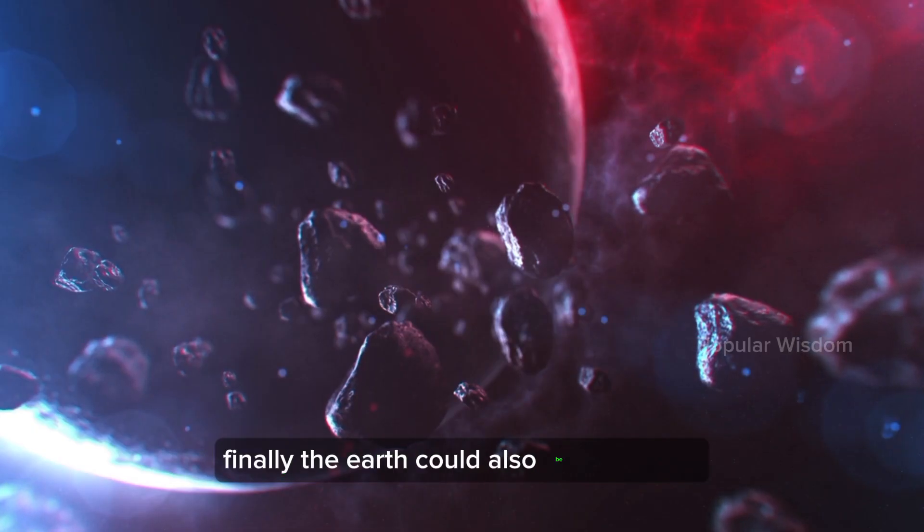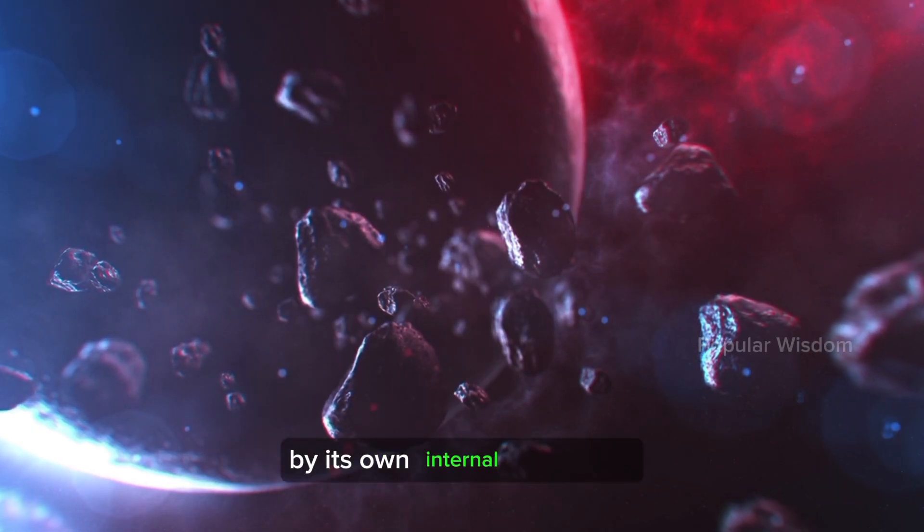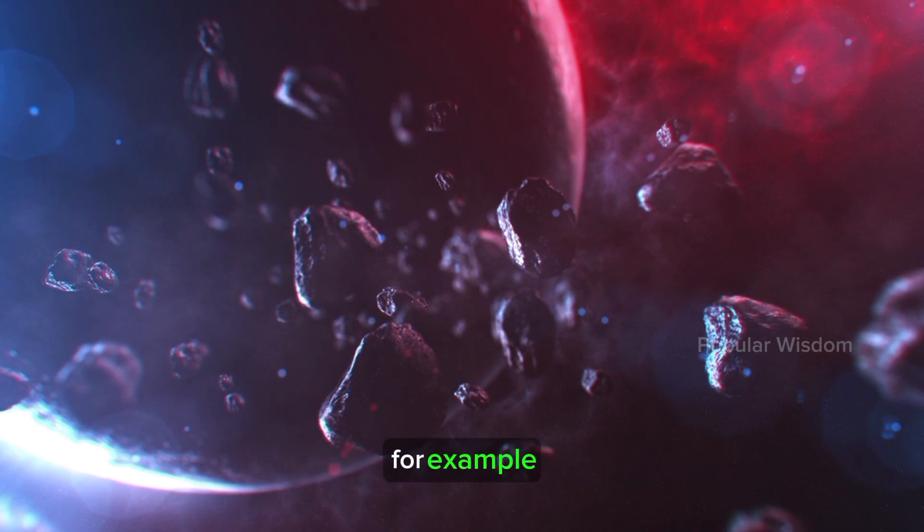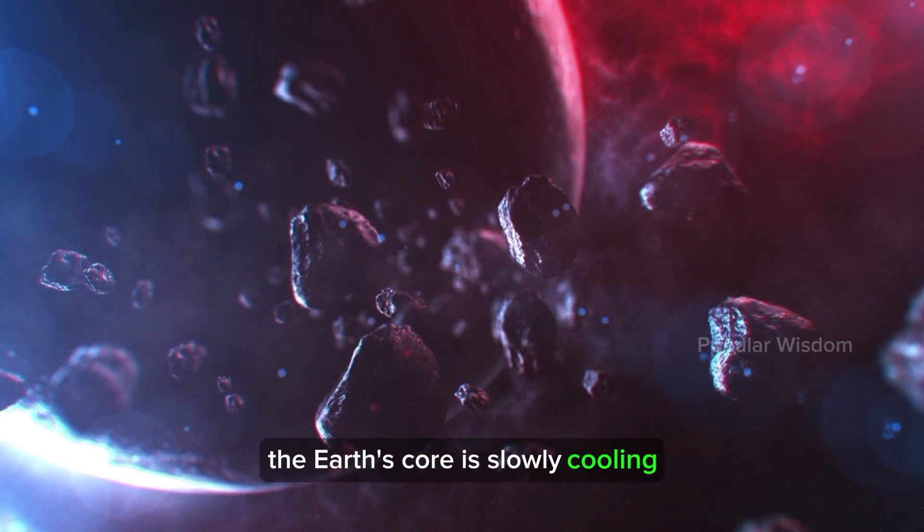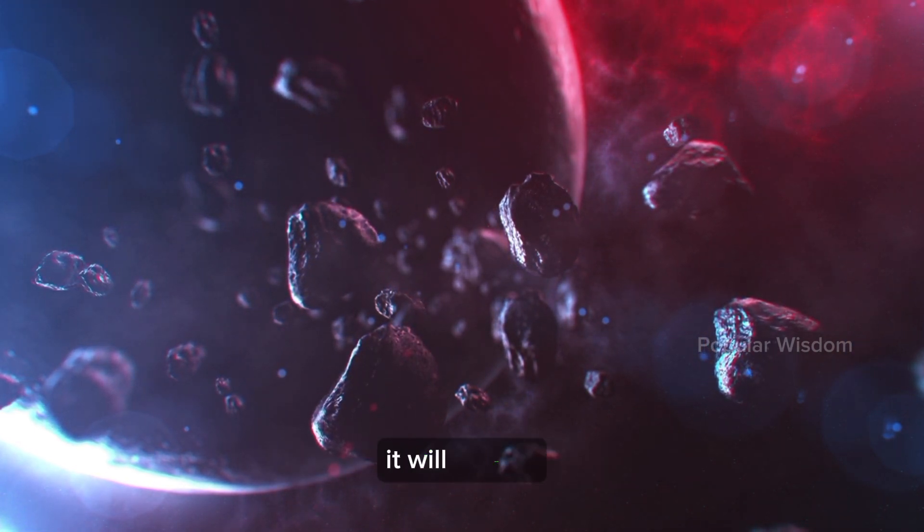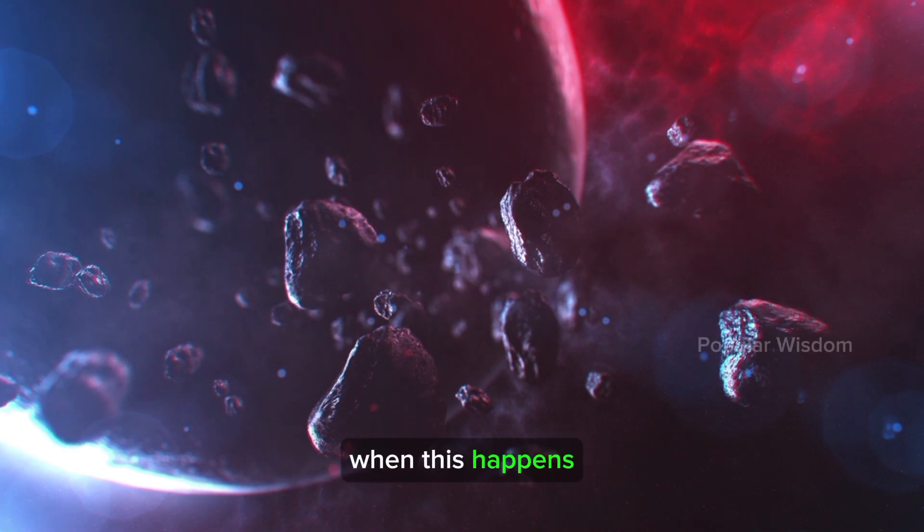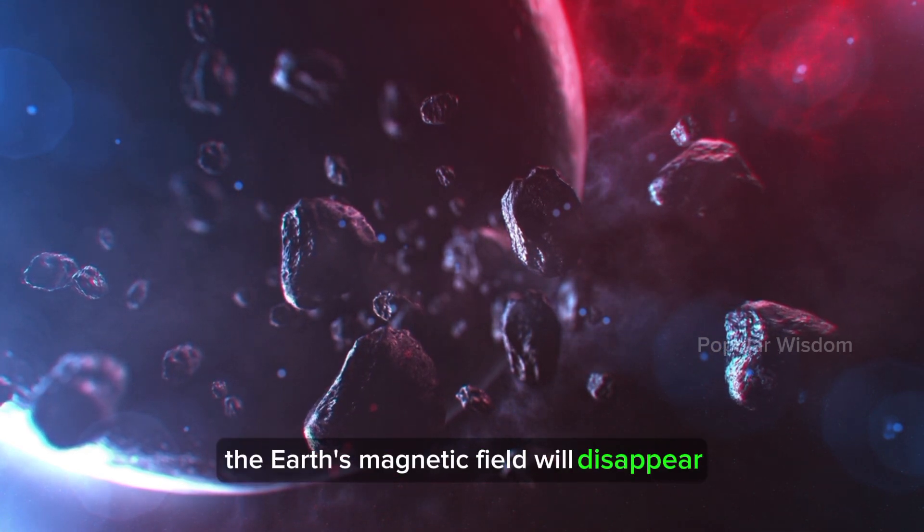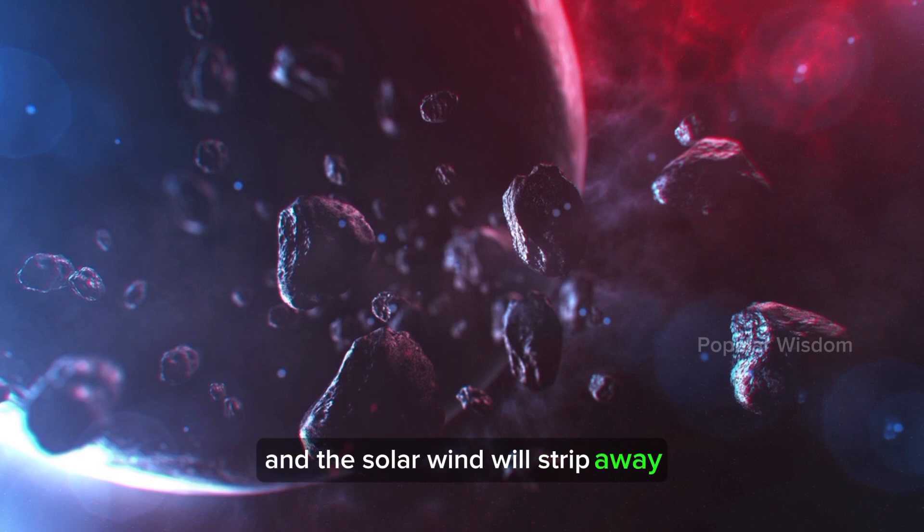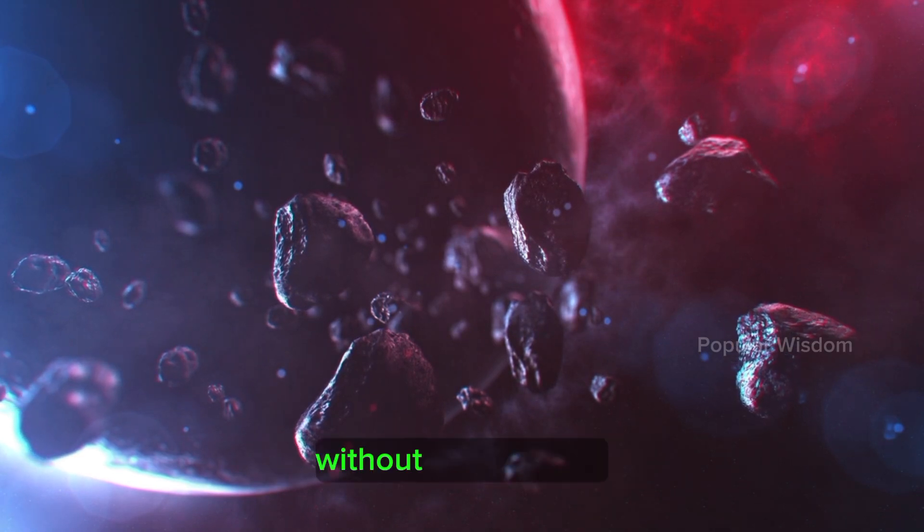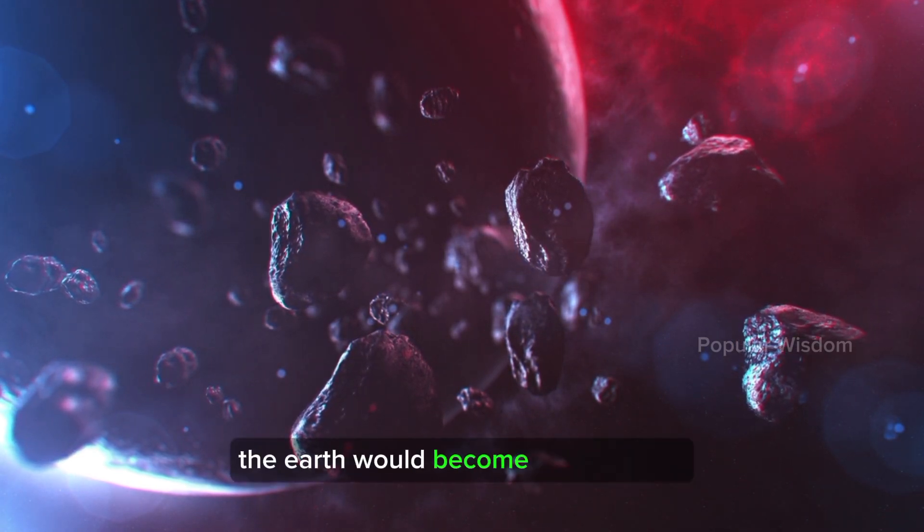Finally, the Earth could also be destroyed by its own internal processes. For example, the Earth's core is slowly cooling, and eventually it will solidify. When this happens, the Earth's magnetic field will disappear, and the solar wind will strip away the Earth's atmosphere. Without an atmosphere, the Earth would become a barren rock.